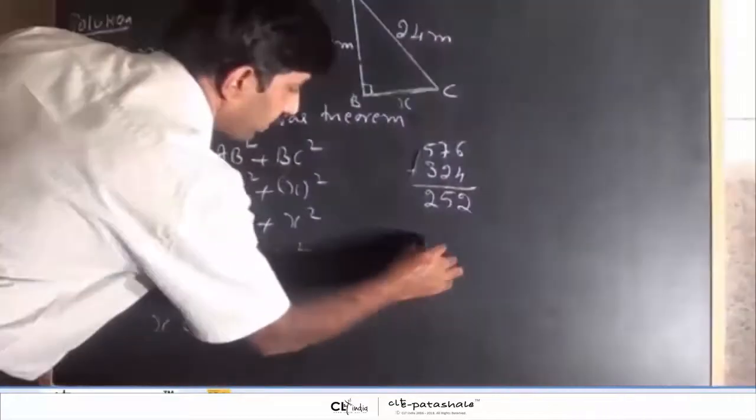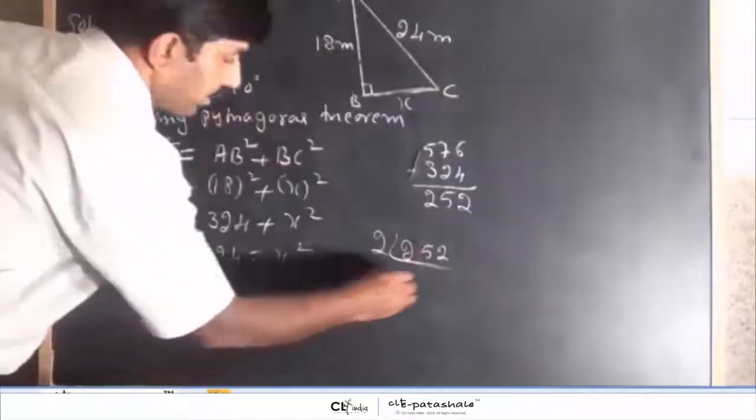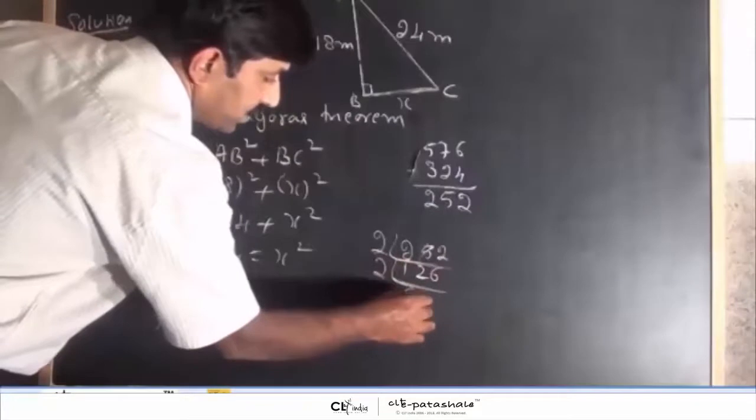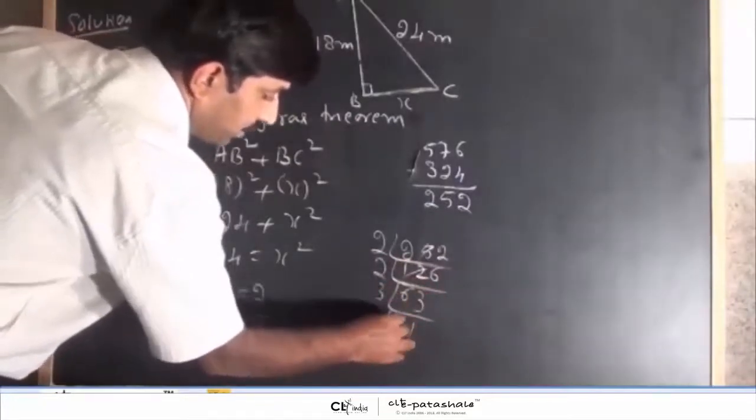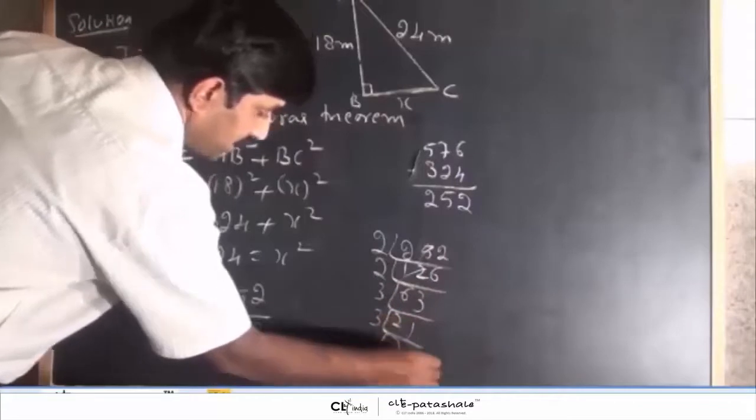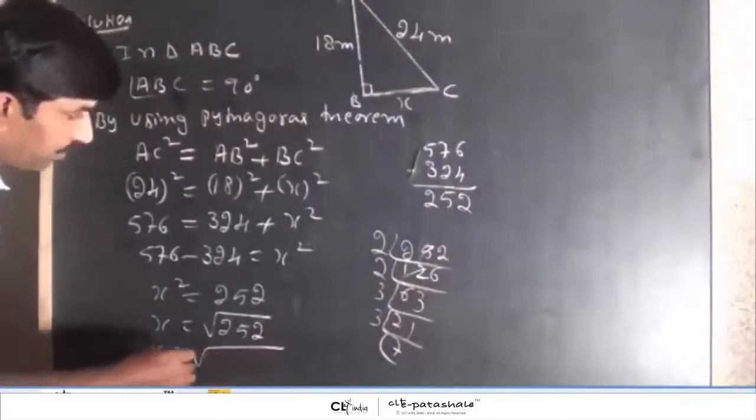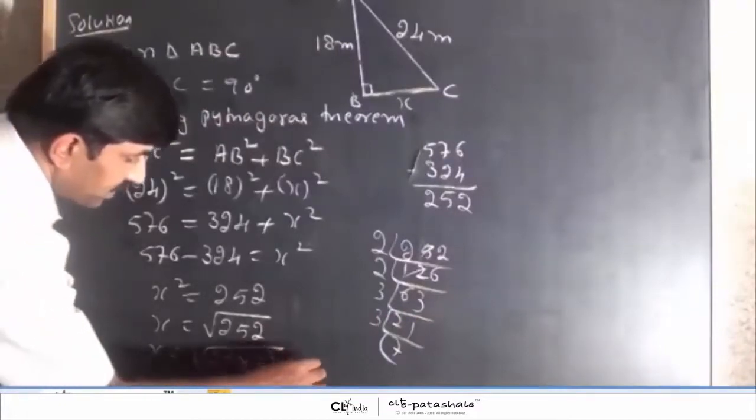Write 252 in the factors. Factors of 252 are 2, 2, 2, 2, 3, 3, 7. x is equal to 252, we can write it as 2 square into 3 square into 7.